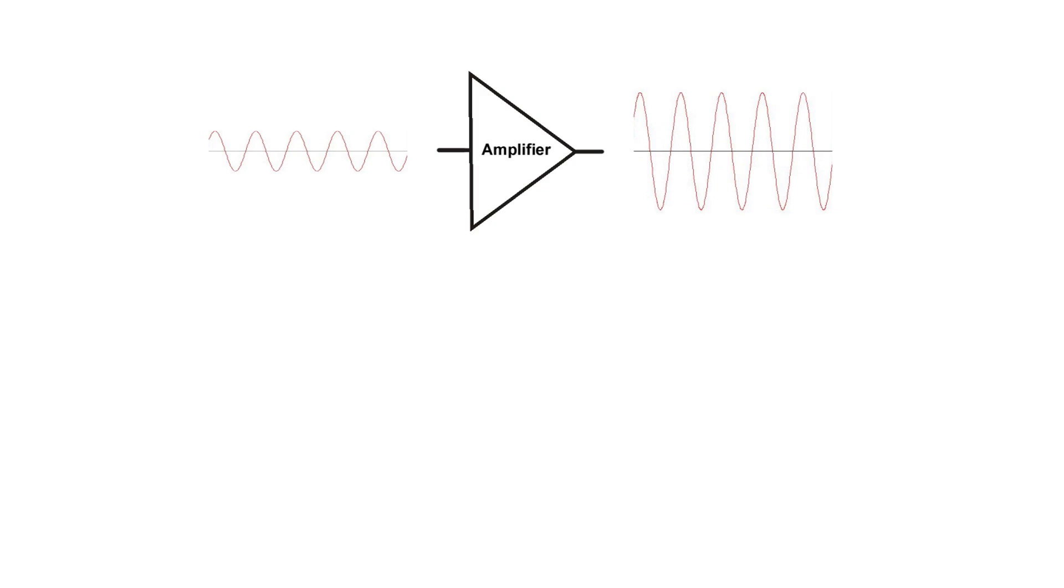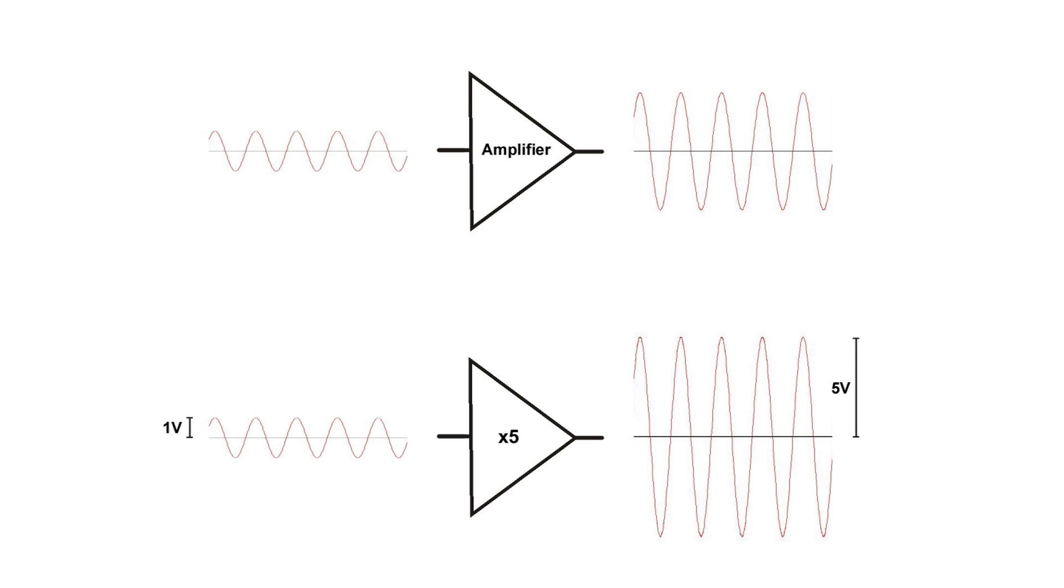So what is an amplifier? Generally speaking, an amplifier takes a small voltage on the input and spits out a bigger voltage on the output. The gain of the amplifier is the amount that you're multiplying the voltage by. For example, here's an amplifier that takes 1 volt on the input and gives 5 volts on the output, so we say this amplifier has a gain of 5.